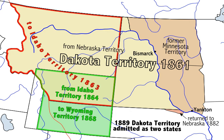The Territory of Dakota was an organized incorporated territory of the United States that existed from March 2, 1861, until November 2, 1889, when the final extent of the reduced territory was split and admitted to the Union as the states of North and South Dakota.